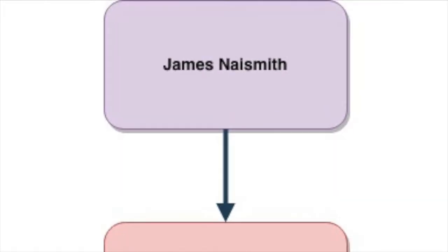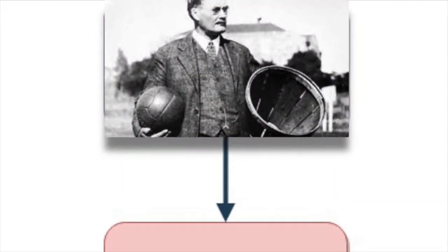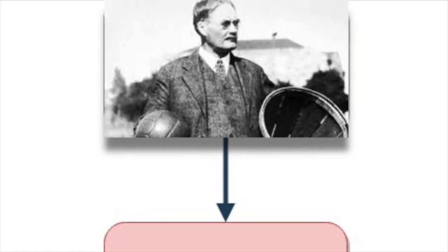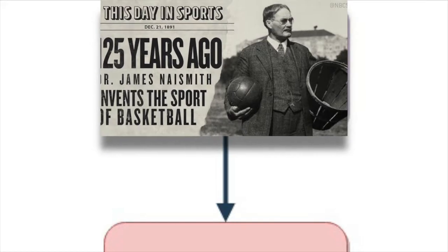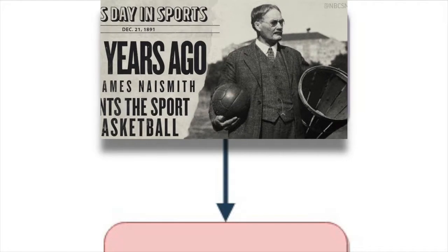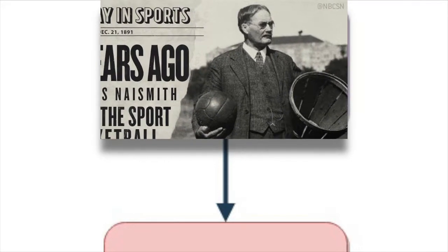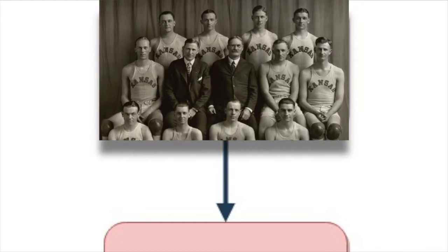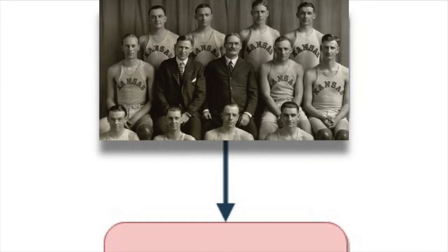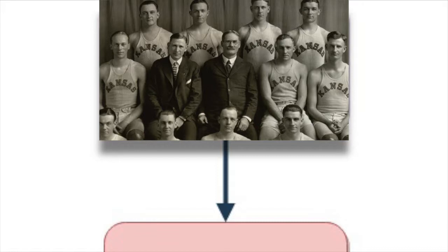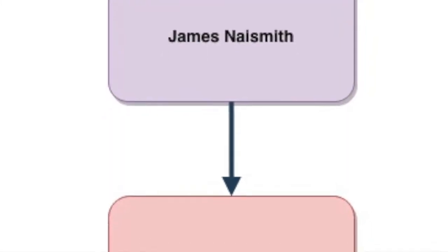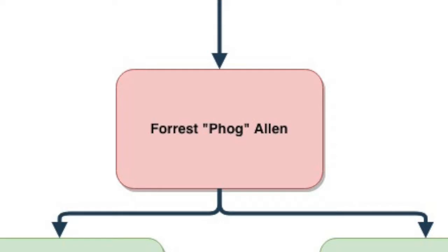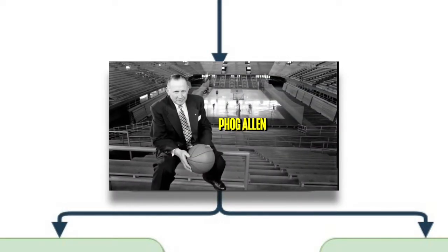The roots of basketball originate from James Naismith, the inventor of the game of basketball. He was the first head coach and founder of the storied college basketball program that is Kansas Jayhawk basketball, which leads him to be one of the main roots of any form of basketball tree that is made. While Naismith was the coach of the team, he also coached a well-known Jayhawk named Forrest Phog Allen, also known as the father of basketball coaching, who coached the University of Kansas for 39 seasons.